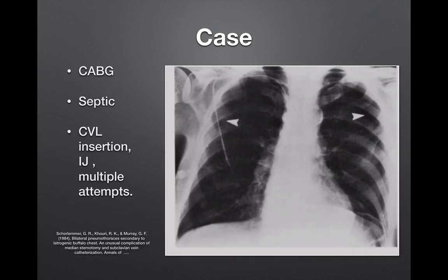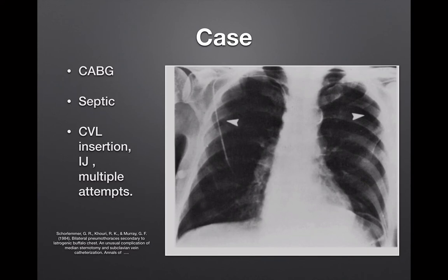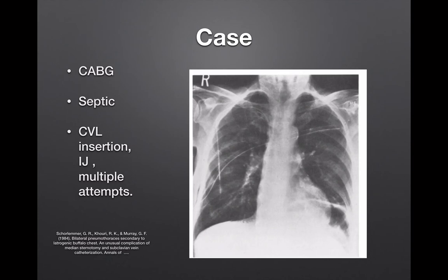You have a 70-year-old with a previous history of CABG times four who comes in six months after the CABG, relatively septic, in your ICU. You ask your resident to put in a line. It goes in perfectly, ultrasound-guided, but takes multiple attempts. Post-procedure chest x-ray shows bilateral pneumothoraces. The resident places a chest tube into the bigger pneumothorax — and then calls you with the repeat chest x-ray.